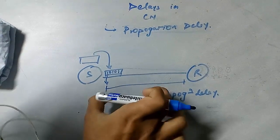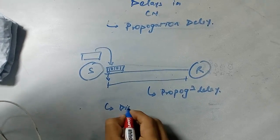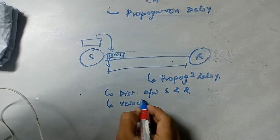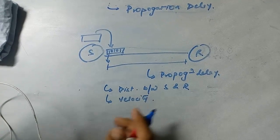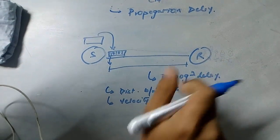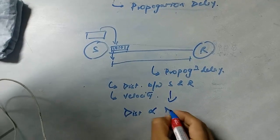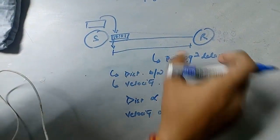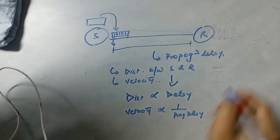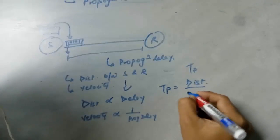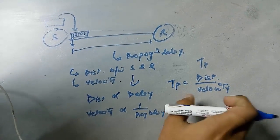The factors that affect propagation delay are: first, the distance between sender and receiver, and second, the velocity of transmission. More will be the distance, more will be the propagation delay. More will be the velocity, less will be the propagation delay. We represent it as TP, and the general formula is: TP equals distance divided by velocity.